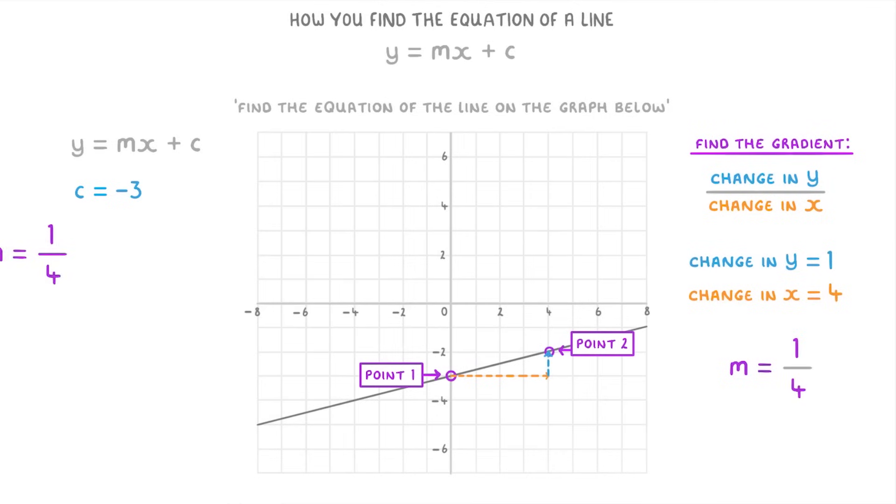Then to finish, we just plug the c equals negative 3 and m equals a quarter into our y equals mx plus c equation to get a final answer of y equals one quarter x minus three.